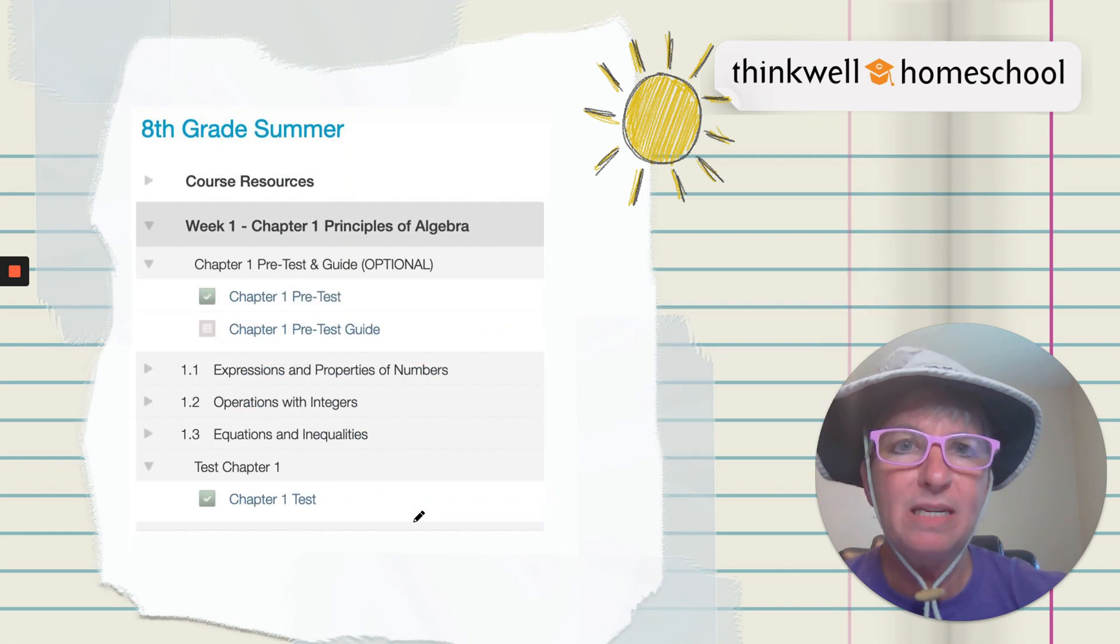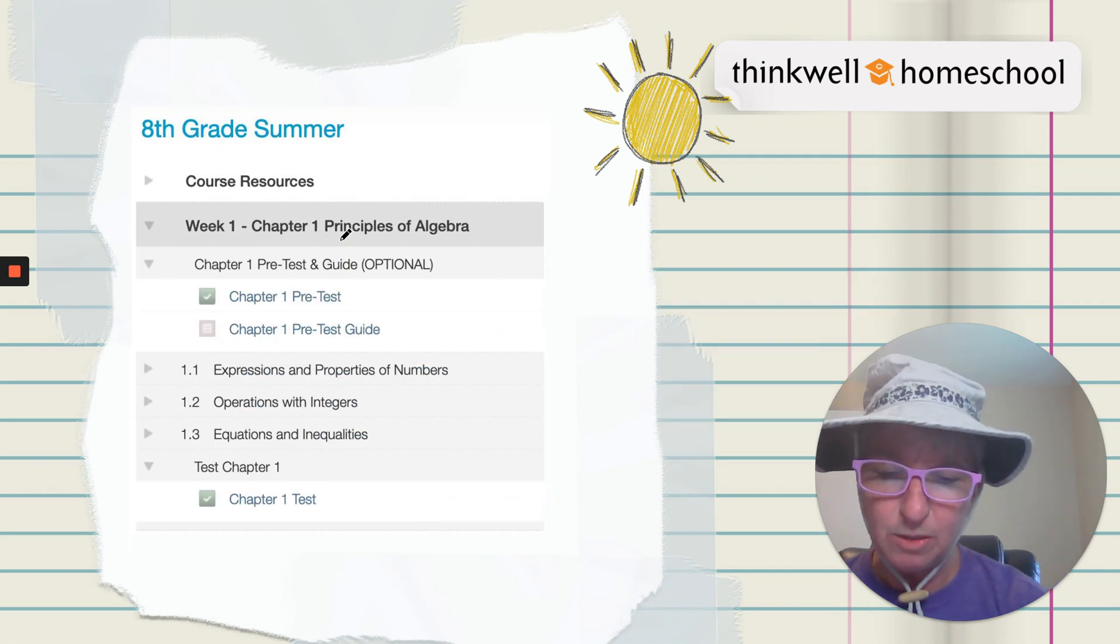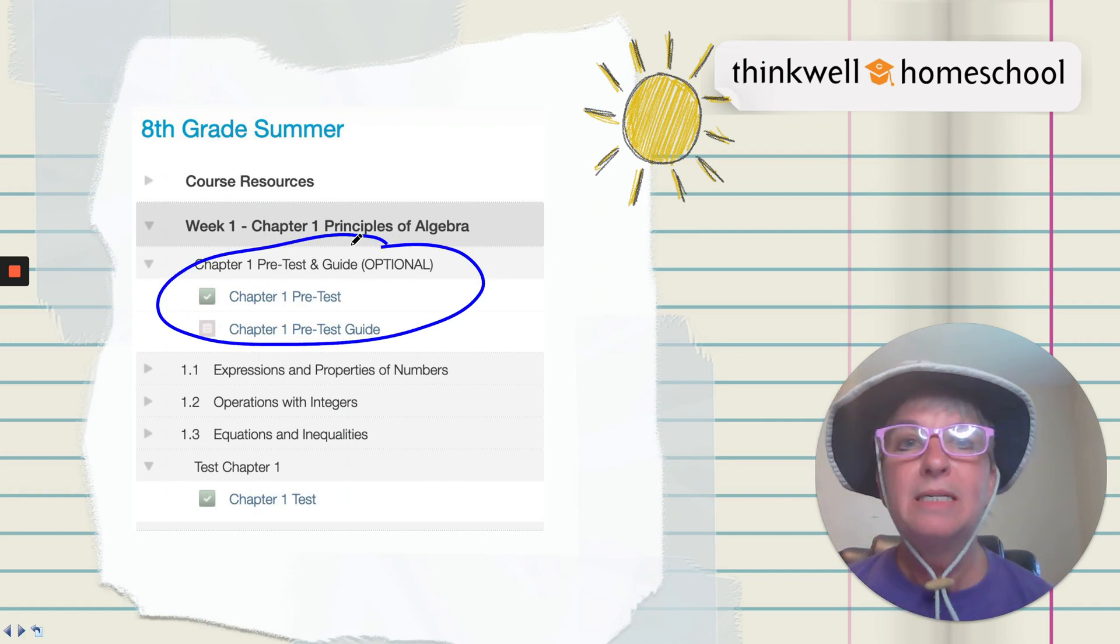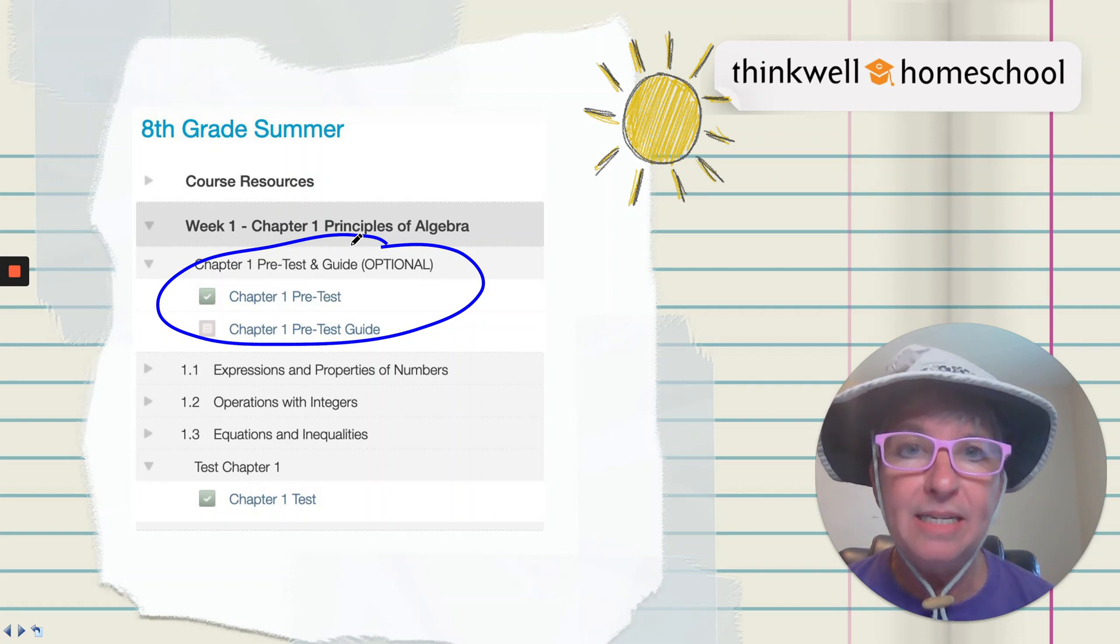What kind of options do we have? Let's say you're short on time and you really know the principles of algebra. Well, every chapter has a pre-test and guide, totally optional. Take that pre-test, and then look at the guide to see which questions you got right, and you can skip those topics and save all that time. How cool is that?